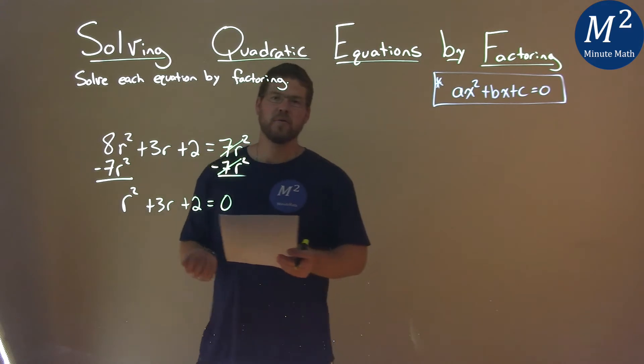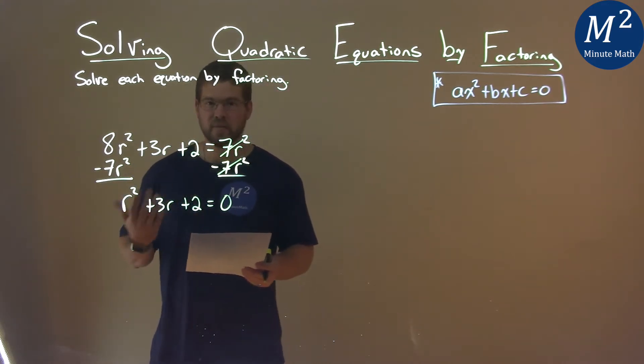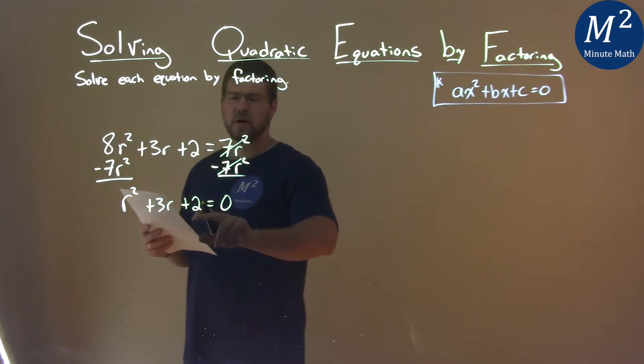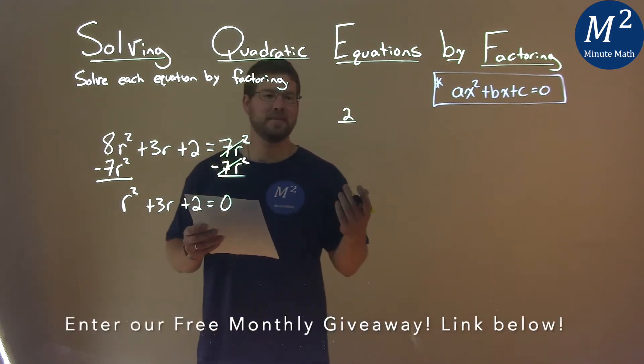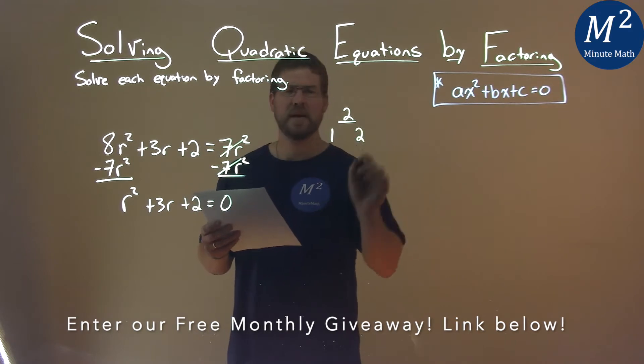So now we have a quadratic that's equal to 0. Let's factor it. We have to look at our c-value, which is 2, and ask ourselves, what two numbers multiply to be 2? That's easy, 1 and 2.